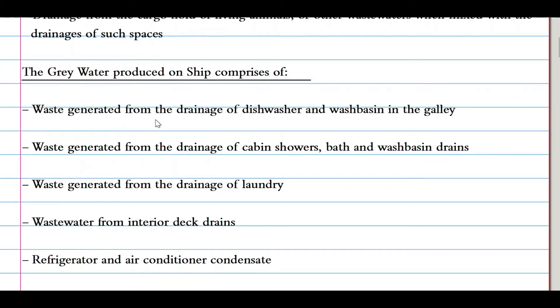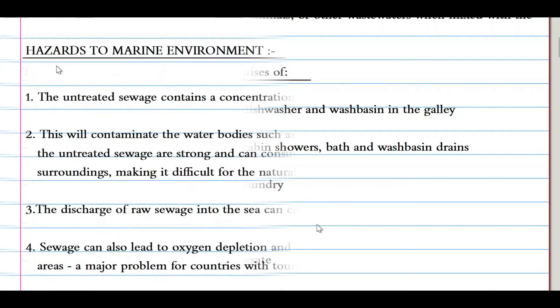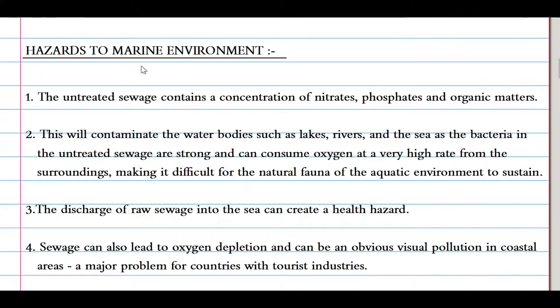Gray water produced on a ship comprises waste from the drainage of dishwashers and washbasins in the galley, drainage of cabin showers, baths, and washbasins, drainage of laundry, wastewater from interior deck drains, and refrigerator and air conditioner condensate.